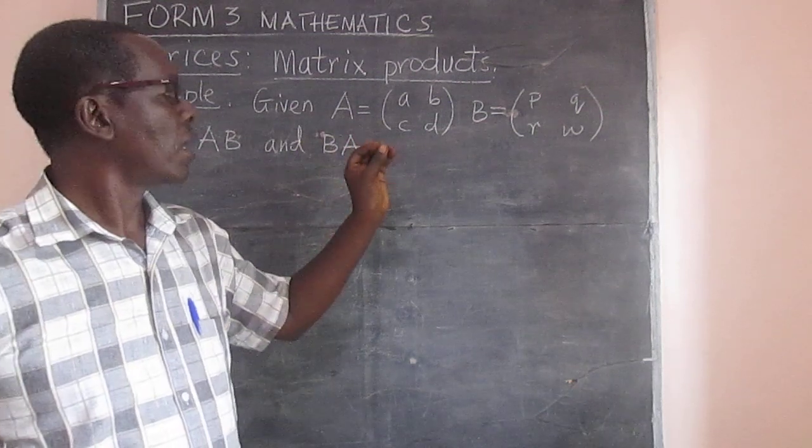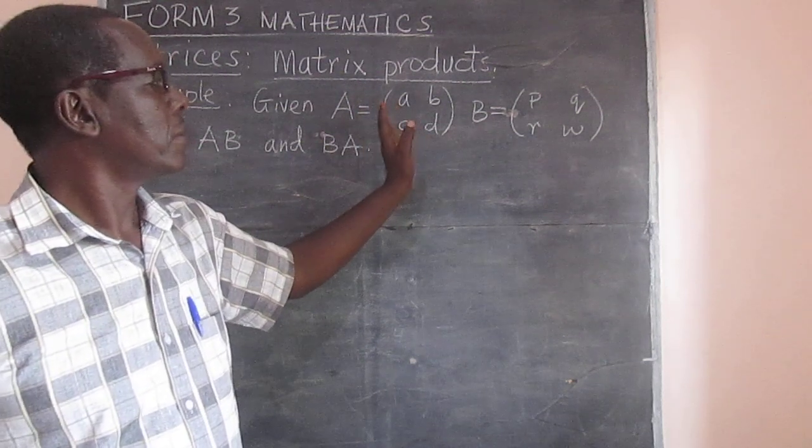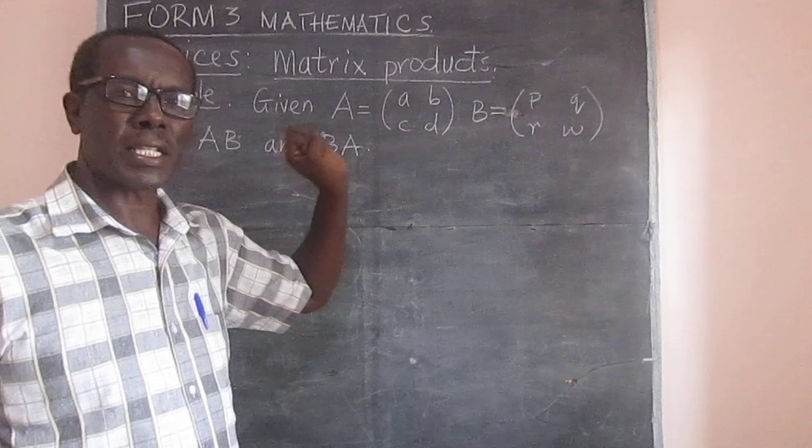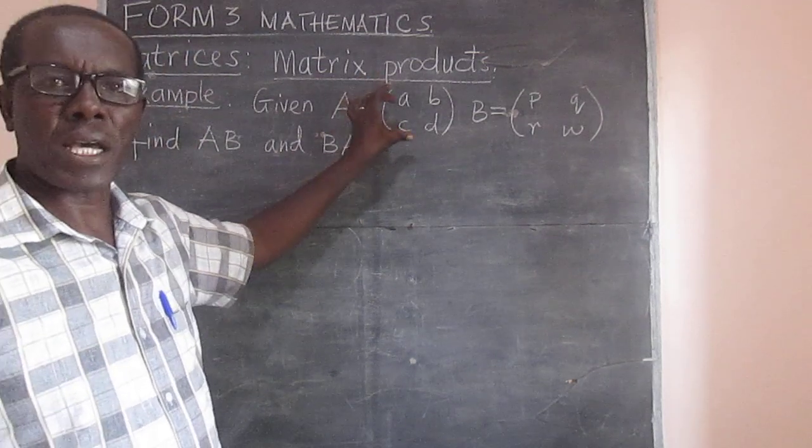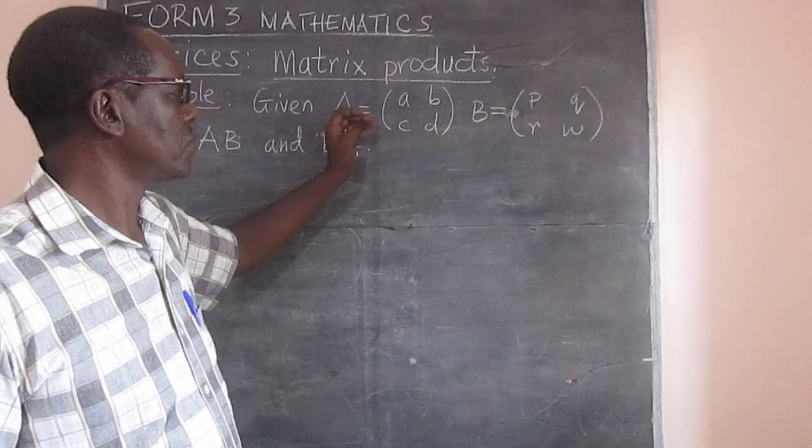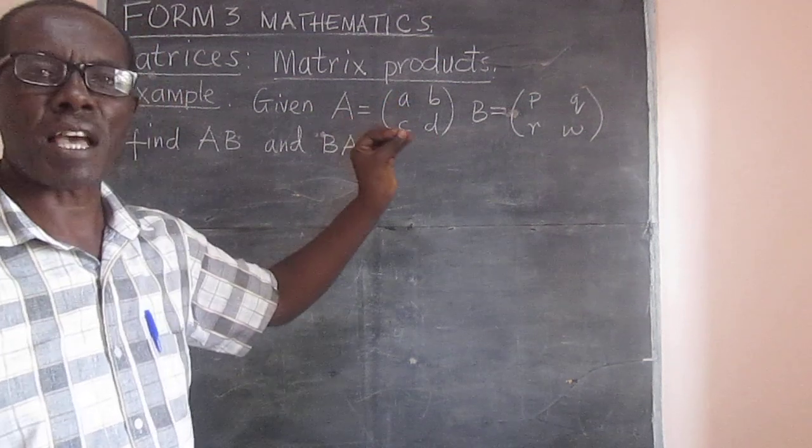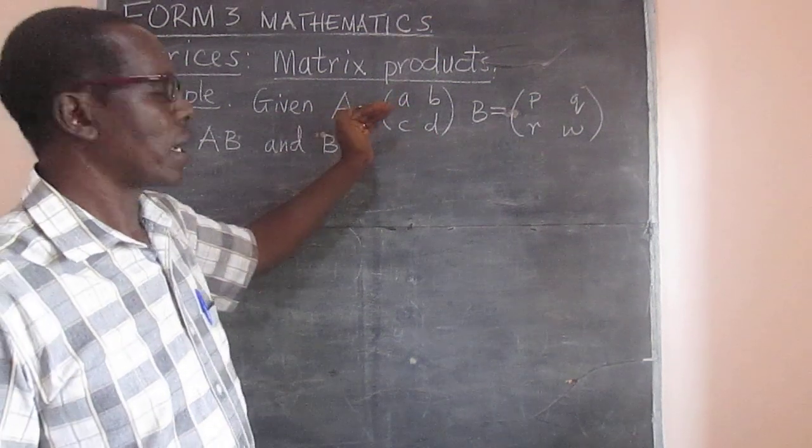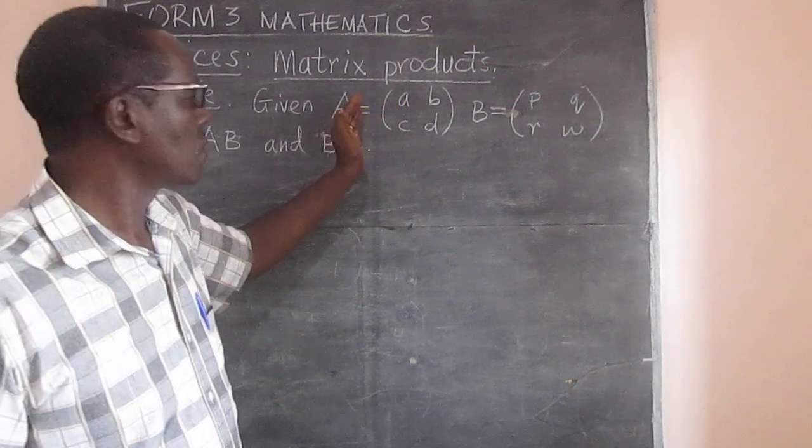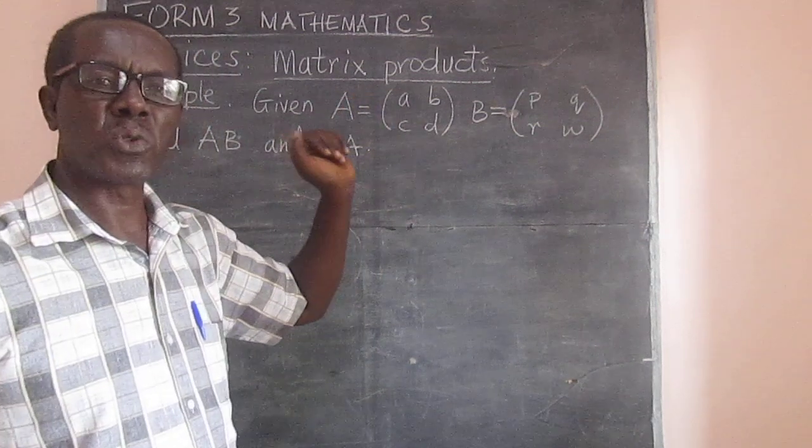For this lesson, I have chosen two square matrices of order 2x2. In other words, the matrices I have taken have two rows and two columns.